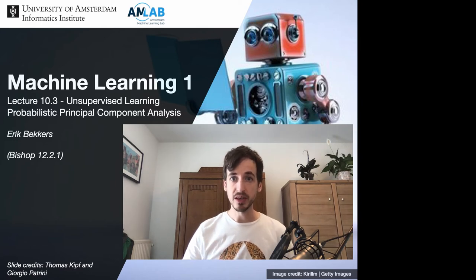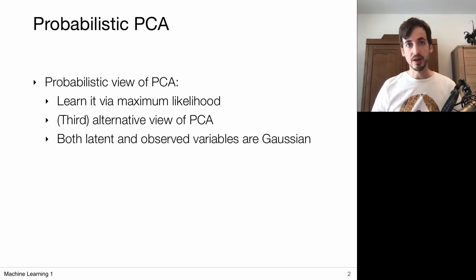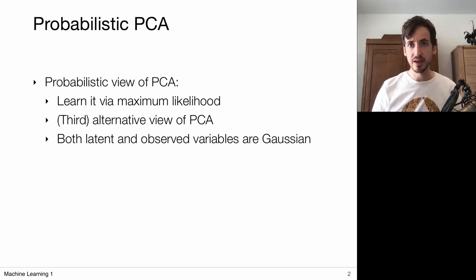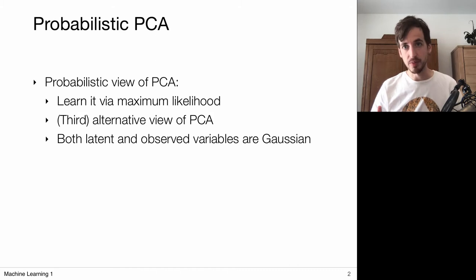We come to a third view on principal component analysis, adopting a probabilistic viewpoint on latent variable modeling. In video 10.1, probabilistic latent variables were discussed, and the Gaussian mixture model was presented as a probabilistic version of the discrete latent variable model obtained by k-means clustering. Now we do something similar and approach principal component analysis from the perspective of continuous latent variable models.